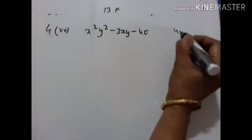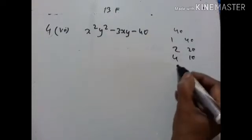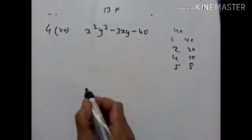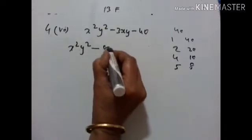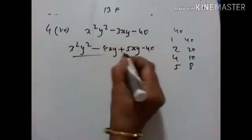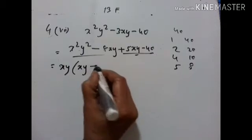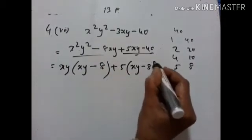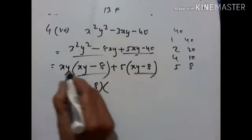Now 1 into 40: factor pairs are 1×40, 2×20, 4×10, 5×8. Minus 8 plus 5 gives us minus 3. So we write X²Y² minus 8XY plus 5XY minus 40. Here XY is common, giving XY minus 8, and 5 is common, giving XY minus 8. So XY minus 8 is common, and what remains is XY plus 5.